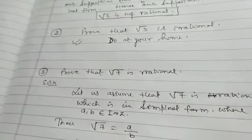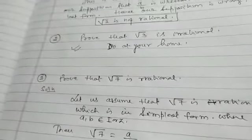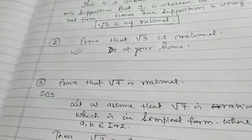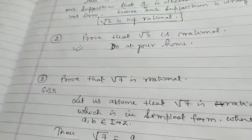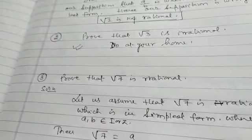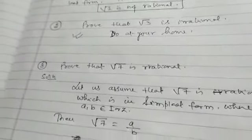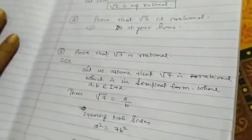Now, you have to prove at your home that root 3 is irrational, and also in exercise 1.3 in NCERT it is given that prove that root 5 is irrational. So you will solve all these problems by the same way.